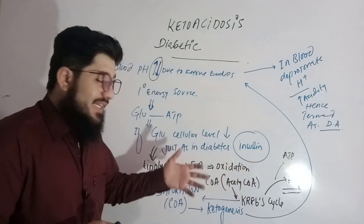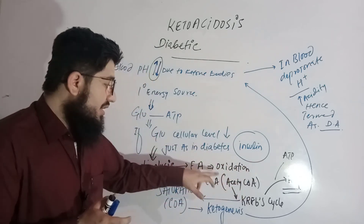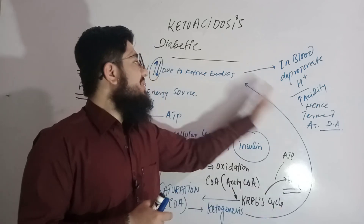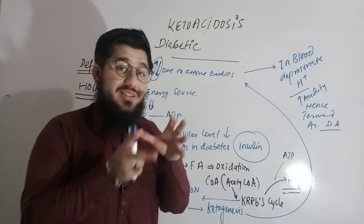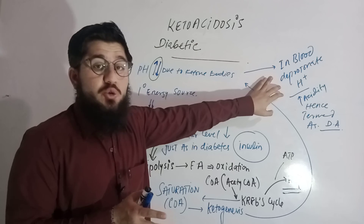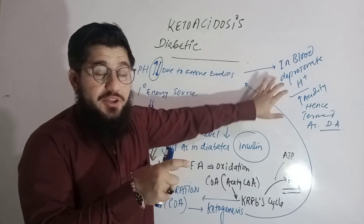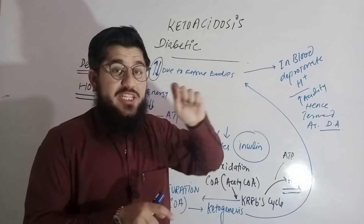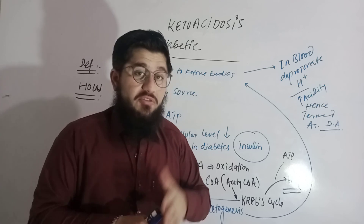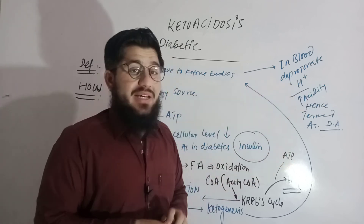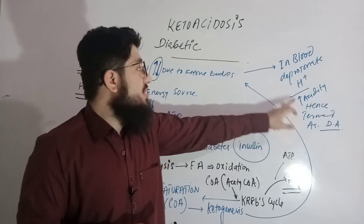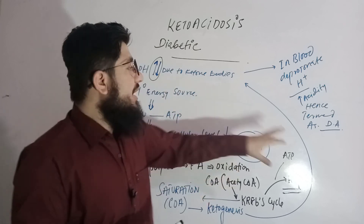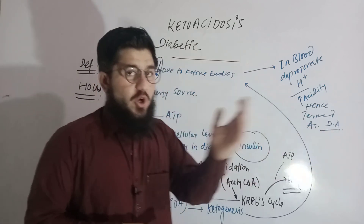Now what happens if the Krebs cycle saturates? Then these acetyl-CoA molecules will undergo the process of ketogenesis — they will synthesize ketone bodies. These ketone bodies, when synthesized, are actually responsible for deprotonating in the blood. This deprotonation results in the production of protons — H+ ions — which are responsible for acidity. This acidity is increased because of ketone bodies, and these ketone bodies are synthesized because of diabetes. That is why it is named diabetic ketoacidosis.